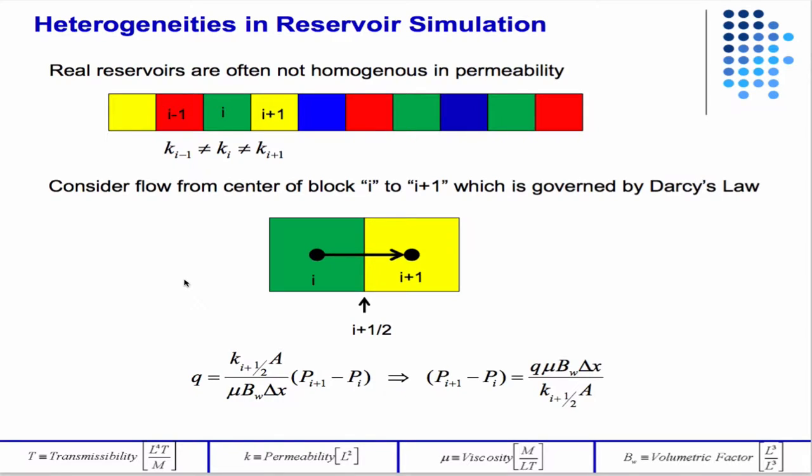So what we did was to try to determine, we defined the flux going from i to i plus 1. We defined some interblock permeability k i plus 1 half, but we initially didn't know exactly what that should be when you have varying heterogeneities.